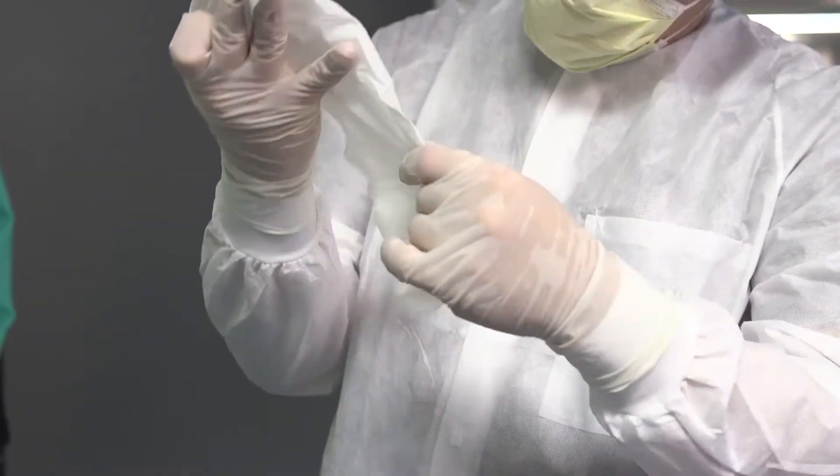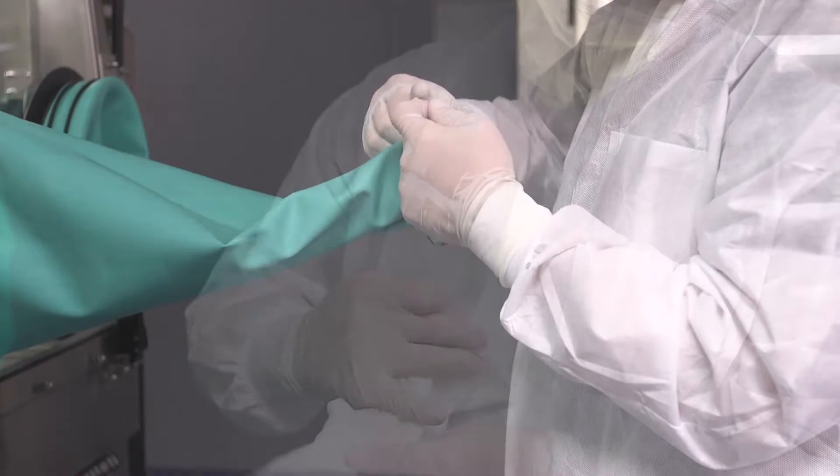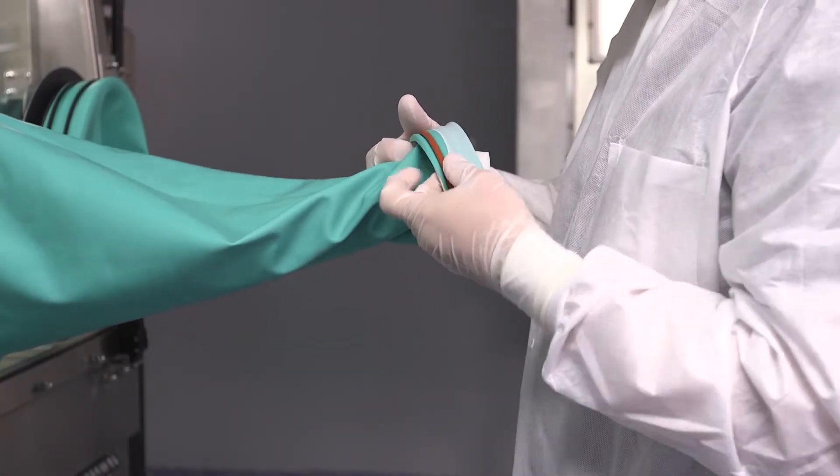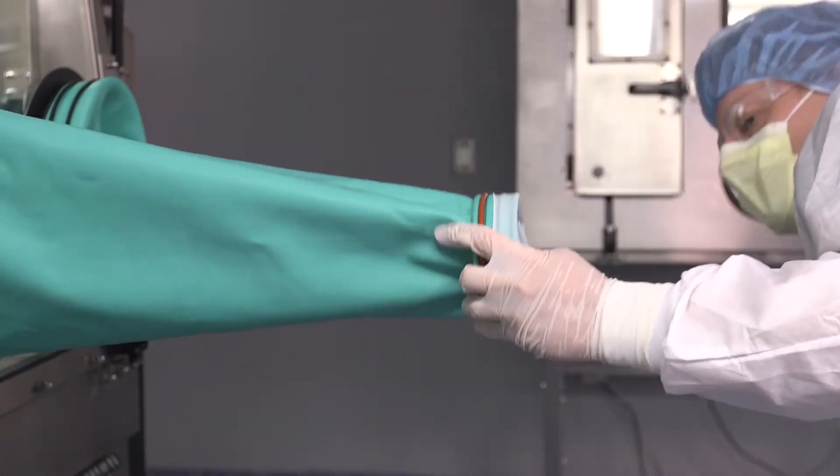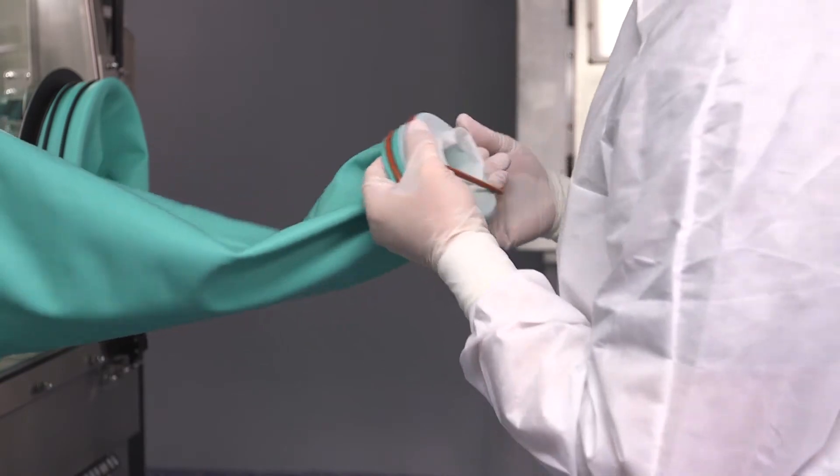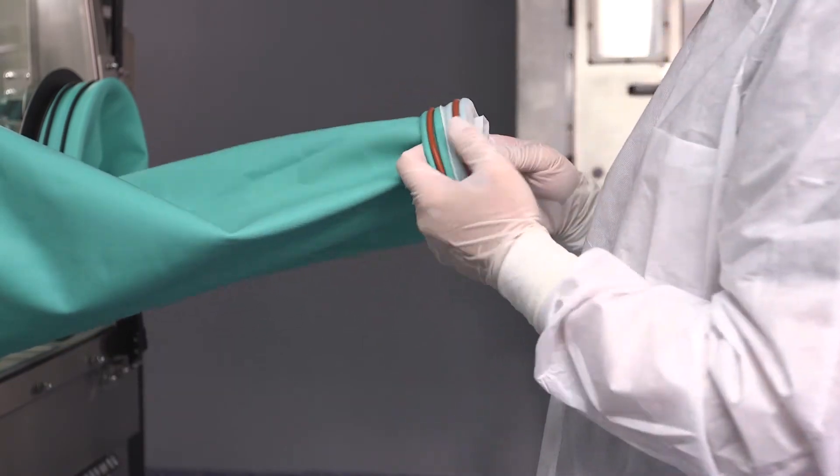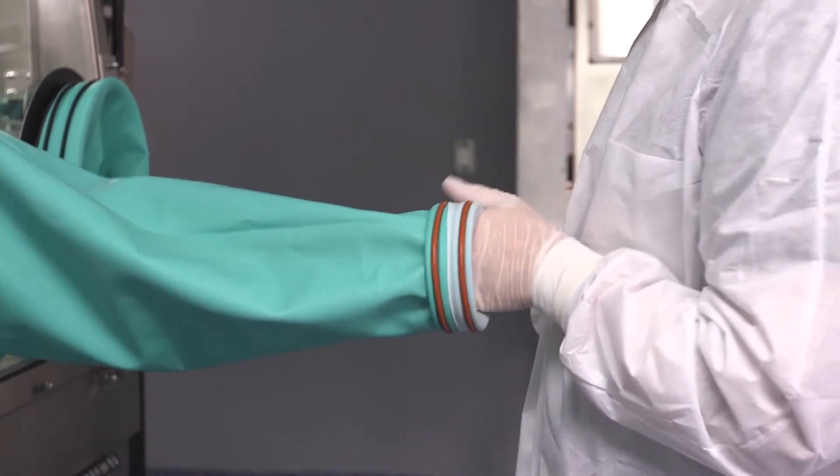While you're stretching the gloves, look for any defects. Take the glove and roll the cuff over the sleeve and GOS. Take the second O-ring and place it over the glove, securing it into the GOS groove closest to you.